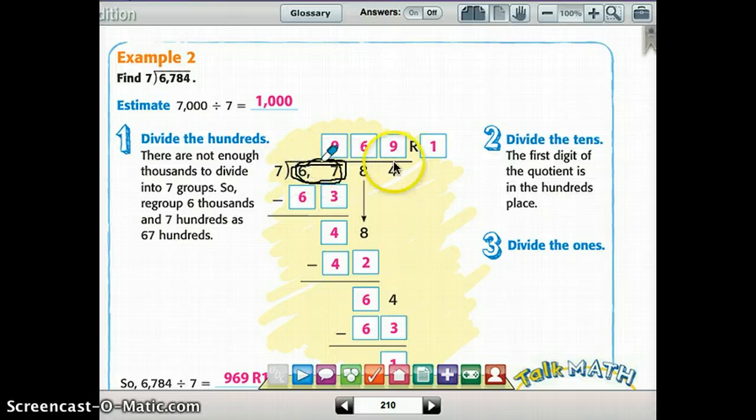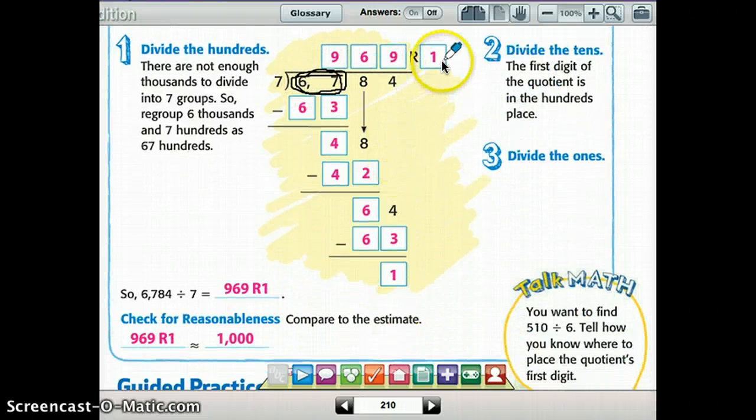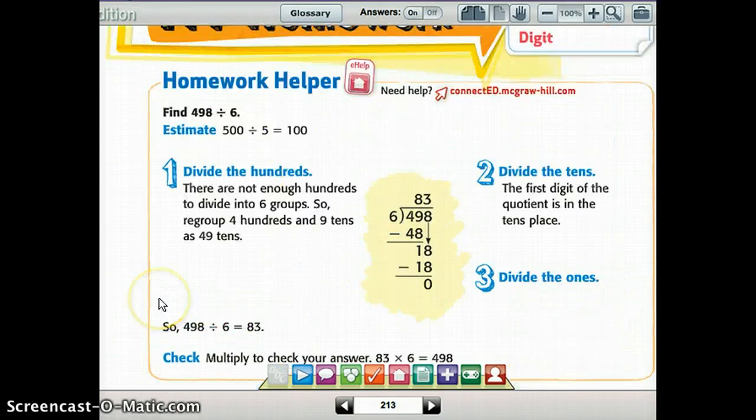So 67 instead of 6. And this one did have a remainder, so when you're checking that, make sure you're multiplying 969 times 7, and then adding in that 1 of that remainder, so don't forget about that. Page 213, homework helper, walks you through those steps again if you need extra help.